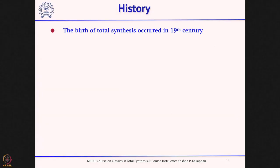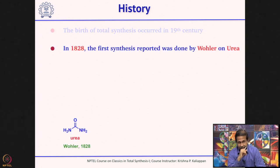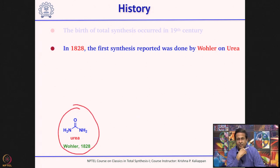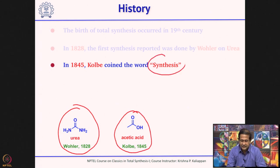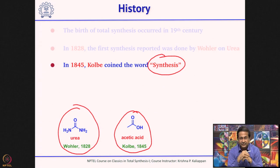When you talk about history, the first synthesis of an organic molecule was reported in the 19th century. In 1828, the first synthesis was reported by Wöhler on urea. Interestingly, this urea was made from an inorganic compound and it was a 100 percent atom-economic reaction. Then Kolbe was the one who made acetic acid, and he was the first person to use the term 'synthesis.' Many times people still make the mistake of where to use synthesis and where to use preparation.